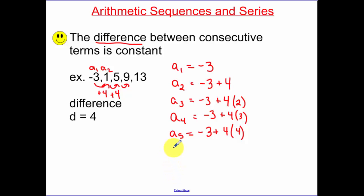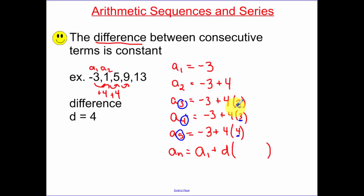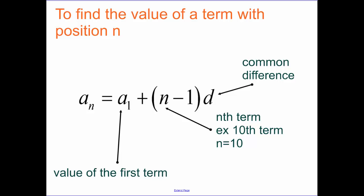Now let's come up with the nth term. The nth term is our first term plus the common difference. Notice the relationship: the number of times we add the common difference is always one less than our term number. So to find the value of a term in position n — for example, the 48th term means n equals 48 — we take our first term plus n minus 1 times the common difference. This is a formula you need to memorize.